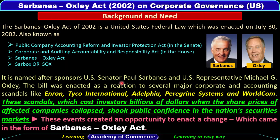The bill was enacted as a reaction to several major corporate and accounting scandals like Enron, Tyco International, Adelphia, Peregrine Systems, and WorldCom. These scandals cost investors billions of dollars when the share prices of affected companies collapsed, and shook public confidence in the national securities market.